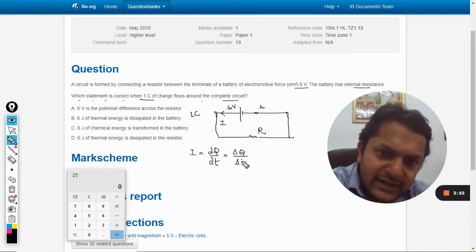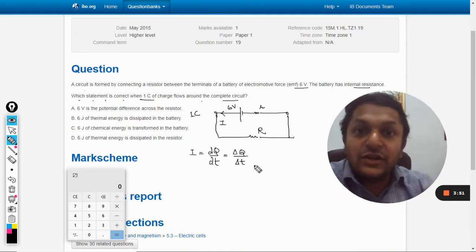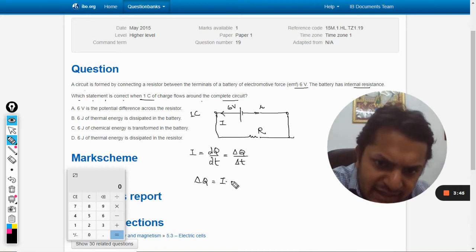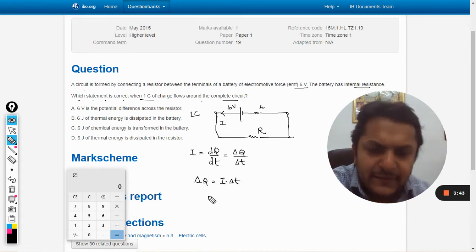This we have studied - it is the rate of flow of charge. So ΔQ will be taken as I into Δt. And there is a formula for the power dissipated in the battery.